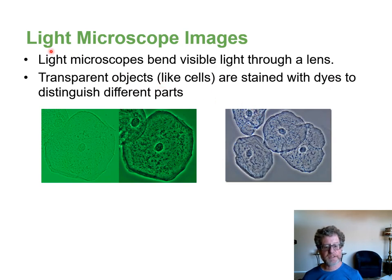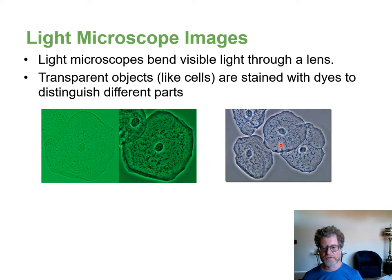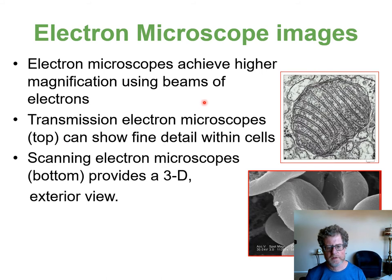Light microscopes sometimes use dyes to enhance color. Here are cheek cells stained with different stains — you can see the nucleus inside where the DNA is held, probably stained using methylene blue. Using a beam of electrons, you can see things a thousand times greater with an electron microscope than a light microscope.